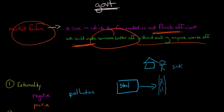So what is happening here is that one party, the steel company, is imposing costs on another party, the children, the family, without reimbursing this family.